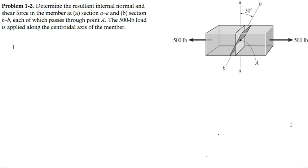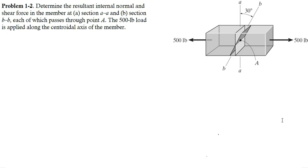Hello everyone. In this video we are going to solve problem number 2 from the chapter of stress in the book Mechanics of Materials by R.C. Hibbeler. In this problem it is required to determine the internal normal and shear force in the member at section AA and section BB as shown in the figure.